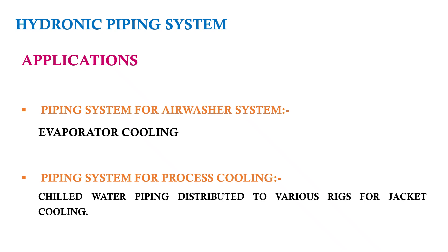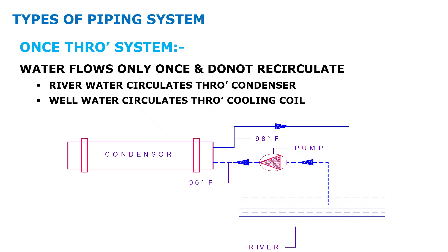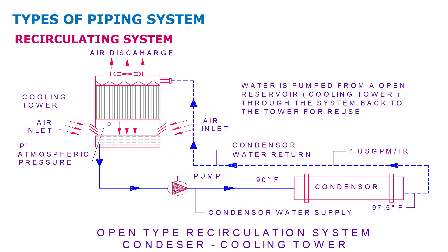In this video and the hydronic series, we will not calculate sizes, which will be covered separately, but we will understand what configurations can be used while designing any hydronic system. The once-through system is one where water comes from a river, takes heat from the condenser, and goes back to the reservoir — the same water does not return. An open pond can also be used to reject the condenser heat of a chiller.